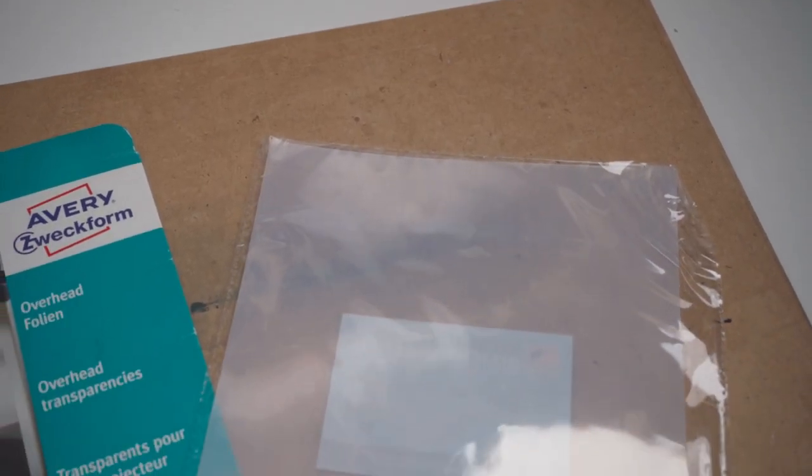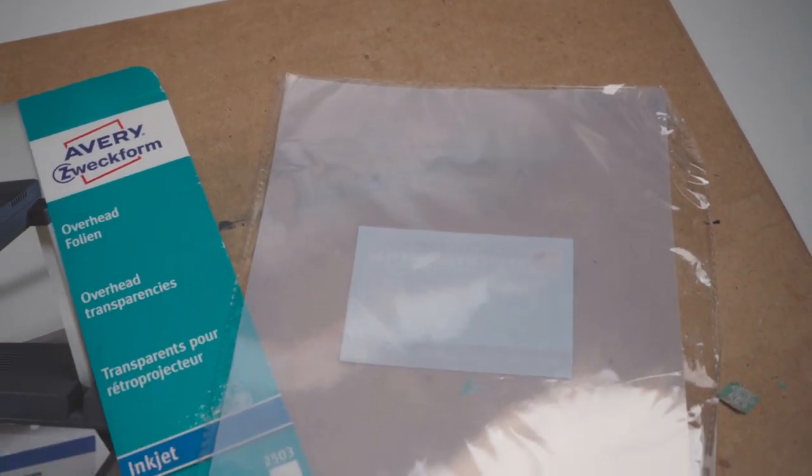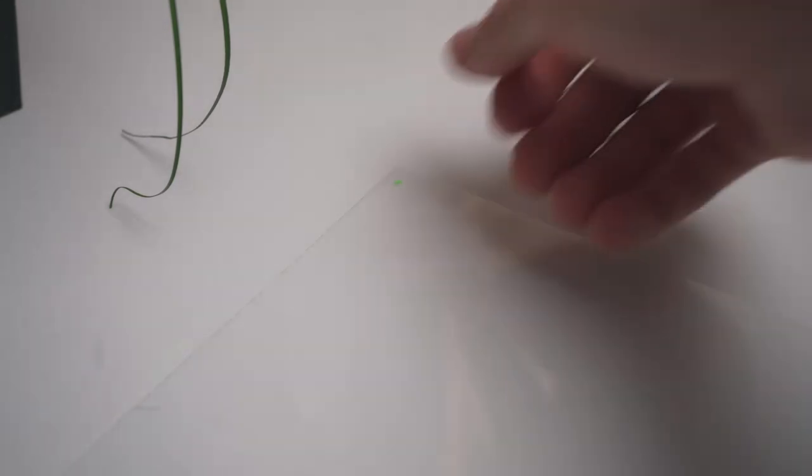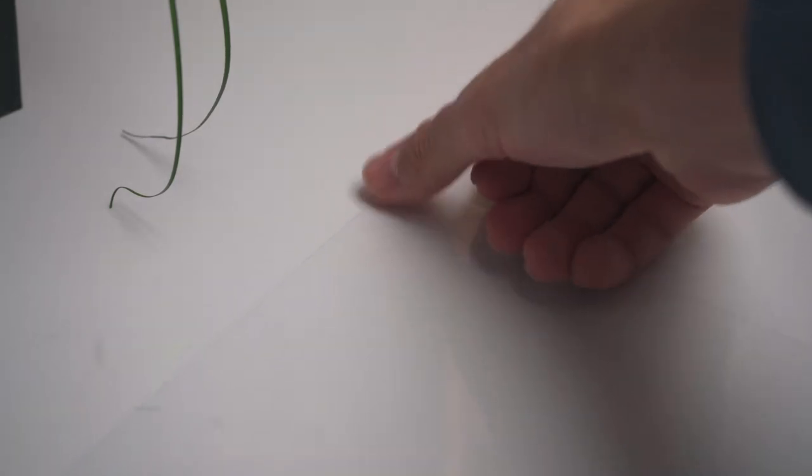Quick tip. If you ever buy some transparent film to use with your inkjet printer sometimes it can be hard to find the printable side. A small trick of mine is to use a highlighter of some kind and make a little marking on the transparency. If I'm able to wipe it away using my finger the printable side is on the back.